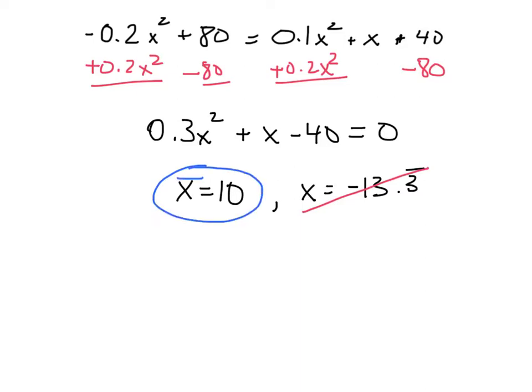Okay, and that's the number that we'll use in both the consumer surplus formula and the producer surplus formula. So let me go ahead and set up the consumer surplus formula right here, CS for consumer surplus. I'm going to integrate from 0 to x-bar, which is 10.